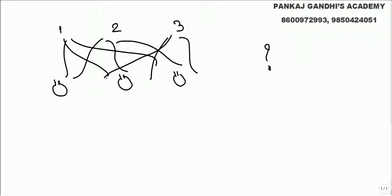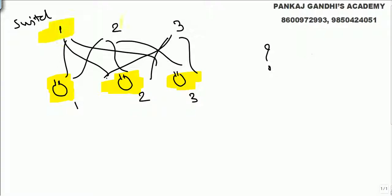The question given here is: there are three bulbs — bulb one, bulb two, and bulb three — and there are three switches which operate the bulbs: switch number one, switch number two, and switch number three. We don't know which switch operates which bulb. We are supposed to find out, standing outside the room.